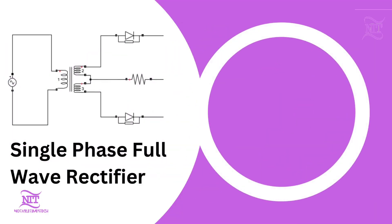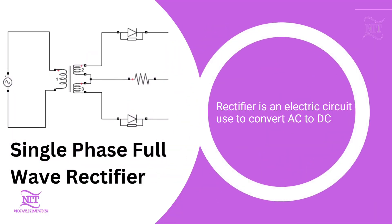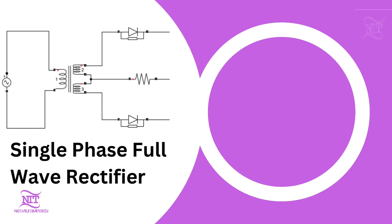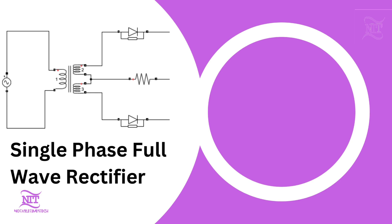A rectifier is an electronic circuit used to convert AC voltage and current to DC voltage and current. The single-phase full wave rectifier consists of an AC voltage source, center tap transformer, resistor, and two diodes.